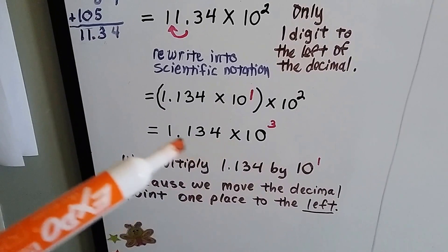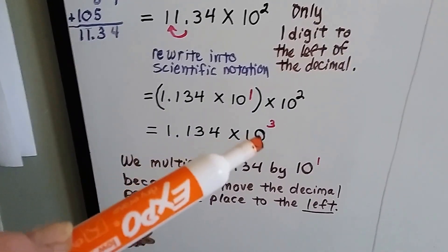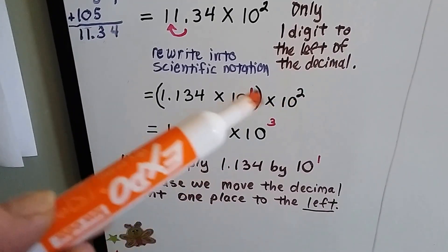We end up with 1.134 times 10 to the third, because we add the 1 and the 2 from the exponents.